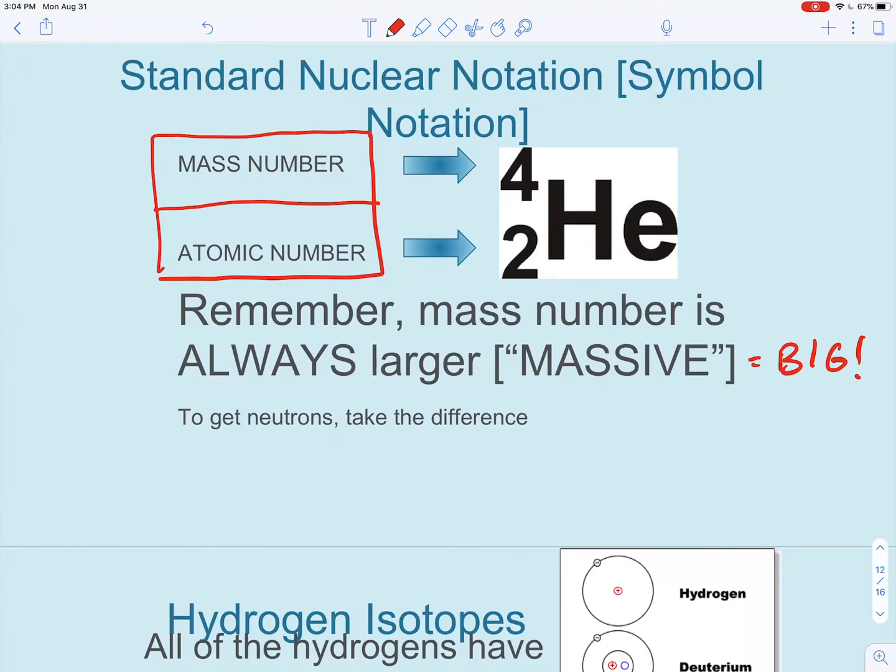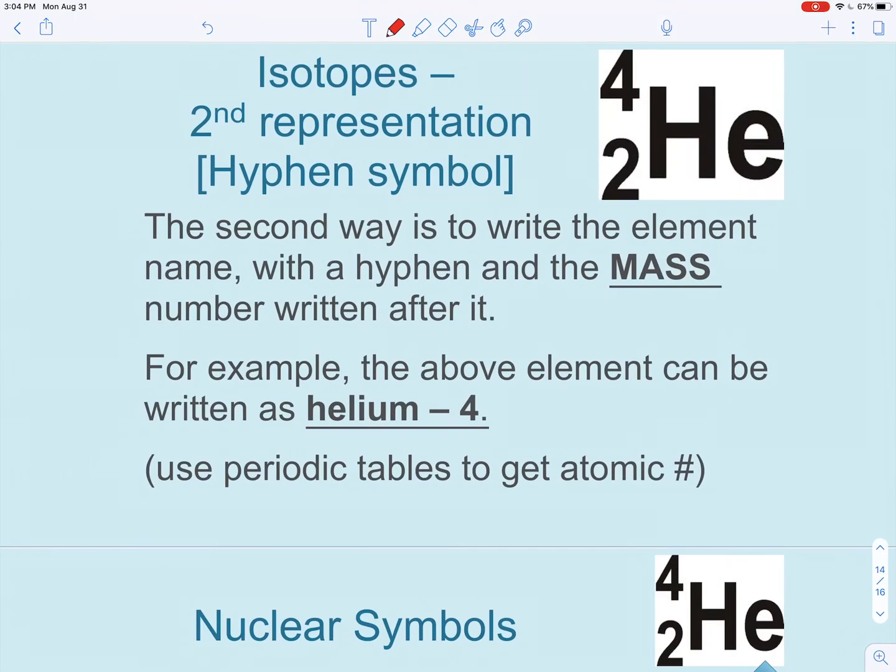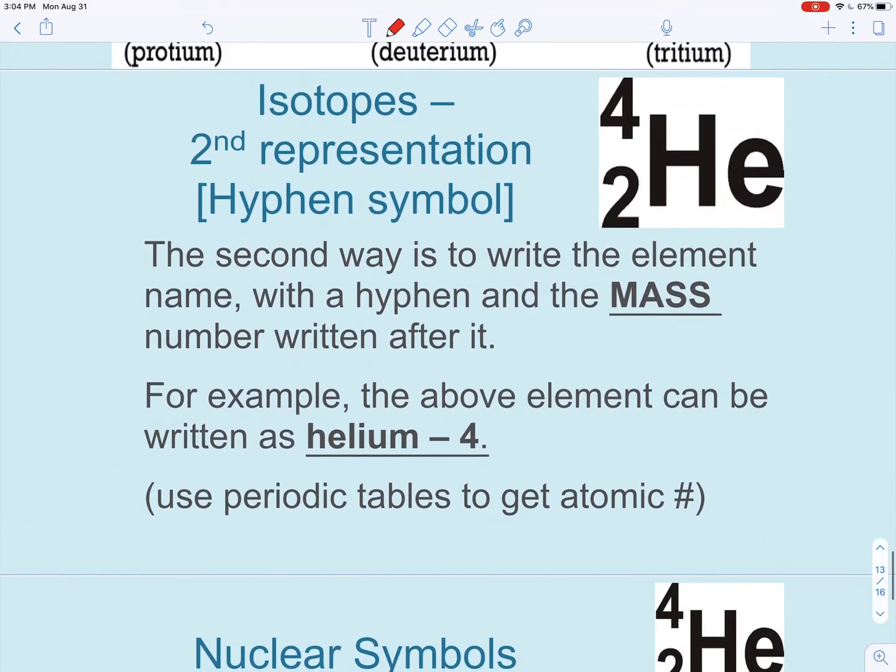To get neutrons, you would just take the difference. Top number minus the bottom number. You can practice this on the worksheet. Here we're looking at a few hydrogen isotopes. The main idea here is that you should notice all of the hydrogens have one proton but a different number of neutrons. You'll figure that out on your worksheet. In order to get neutrons, all you have to do is subtract top number minus the bottom number.